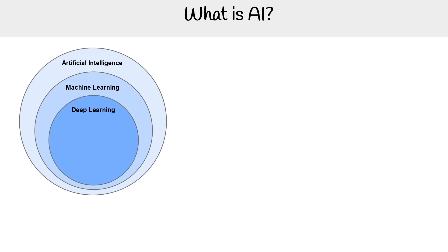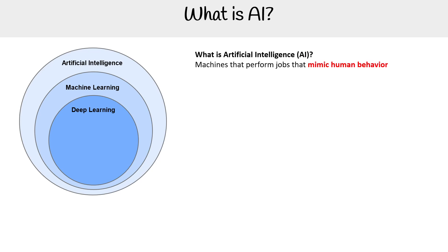So let's first take a look at artificial intelligence, also known as AI. These are machines that perform jobs that mimic human behavior. The key thing here is that they are human-like, or doing tasks that you'd expect a human to do. And that is clearly a very broad term for what is AI, and so you can see why a lot of things are attributed to being AI.